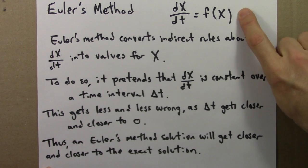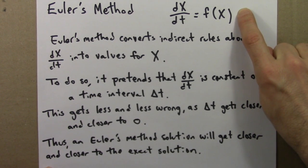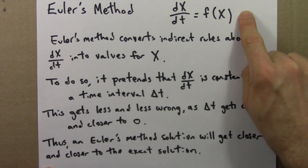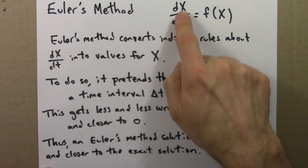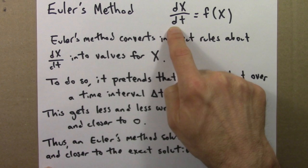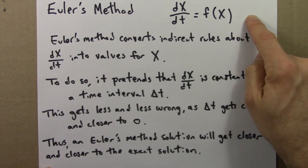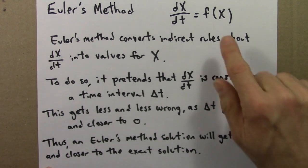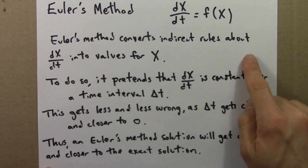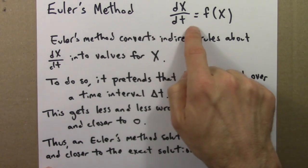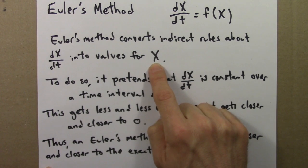A differential equation is a dynamical system, a rule for how something changes. The rule is a little bit indirect because it is in terms of the derivative, the rate of change of this quantity x and not x itself. But Euler's method is a little bit of a trick that converts this indirect information about the derivative into direct information about values for x.